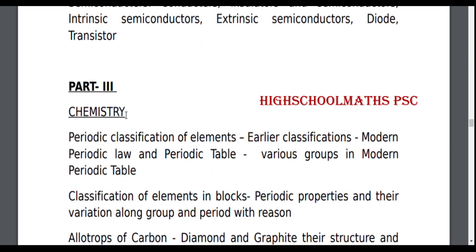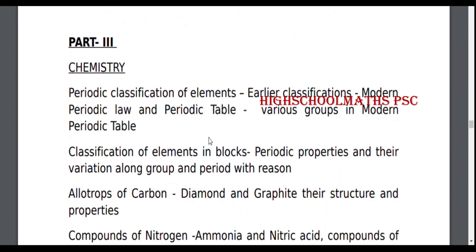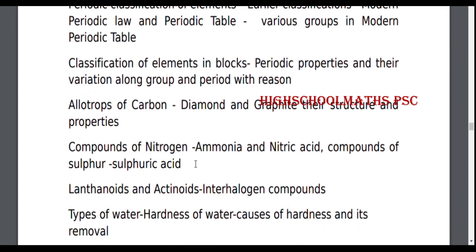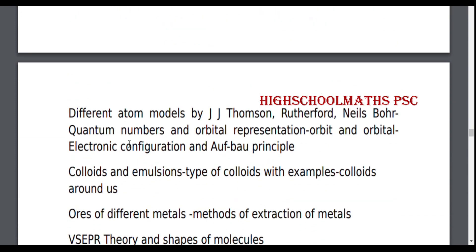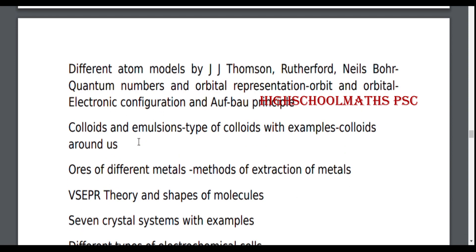Part 3 Chemistry: Periodic Classification of Elements — Earlier Classification, Modern Periodic Law, Periodic Table, Various Groups in Modern Periodic Table, Classification of Elements in Blocks. Allotropes of Carbon, Compounds of Nitrogen, Lanthanoids and Actinoids. Types of Water, Hardness of Water, Causes of Hardness and its Removal. Atomic Models by J.J. Thomson, Rutherford, Niels Bohr. Quantum Numbers and Orbitals, Orbit and Orbital. Electronic Configuration and Aufbau Principle. Colloids and Emulsions.